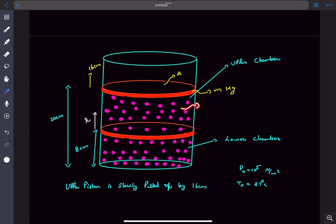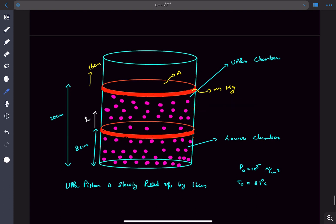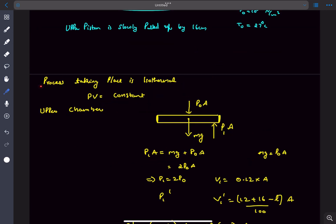The process that the gas undergoes is going to be isothermal in nature because the temperature inside will always equal the surrounding temperature. So the process taking place is isothermal, which means PV equals constant.